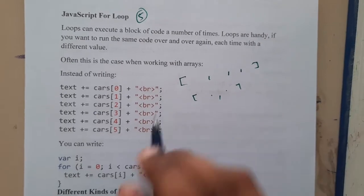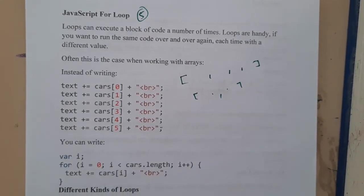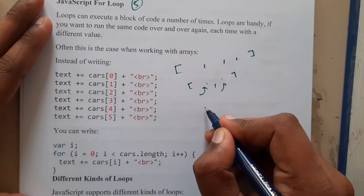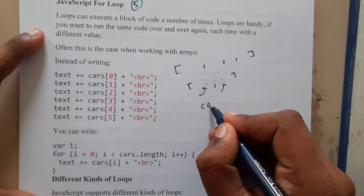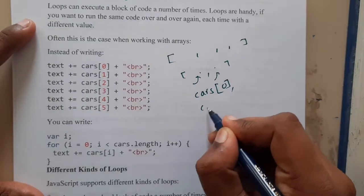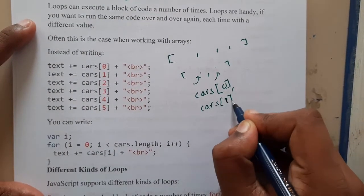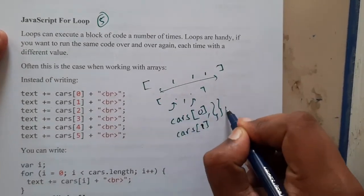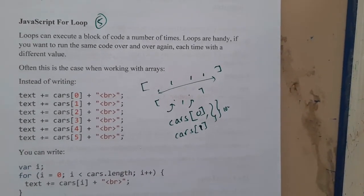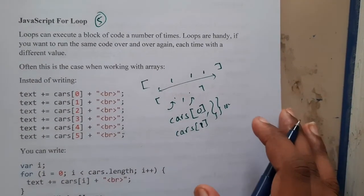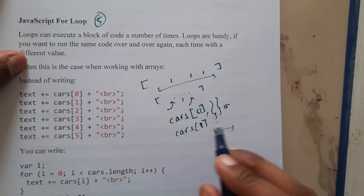We will be discussing arrays in our next lecture — this is just for your understanding of how loops will be helpful. To read an element from an array, assume the array name is 'cars'. The first element is at index zero, the second at index one. For two elements you write two lines — that's fine. But for a thousand elements, will you write a thousand lines? That is absolutely not a good practice.